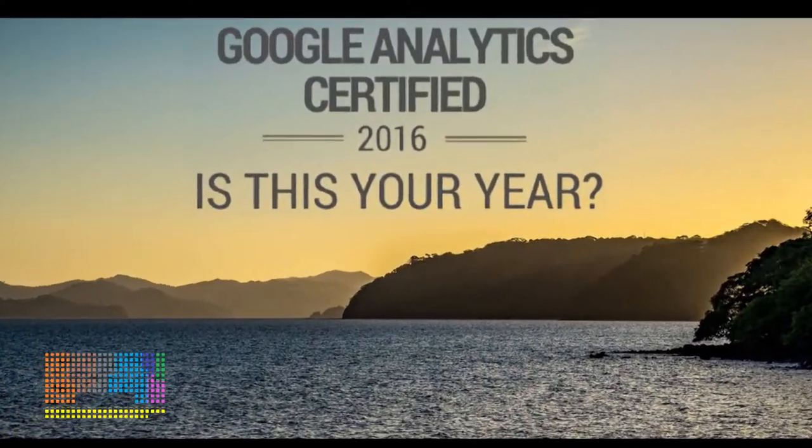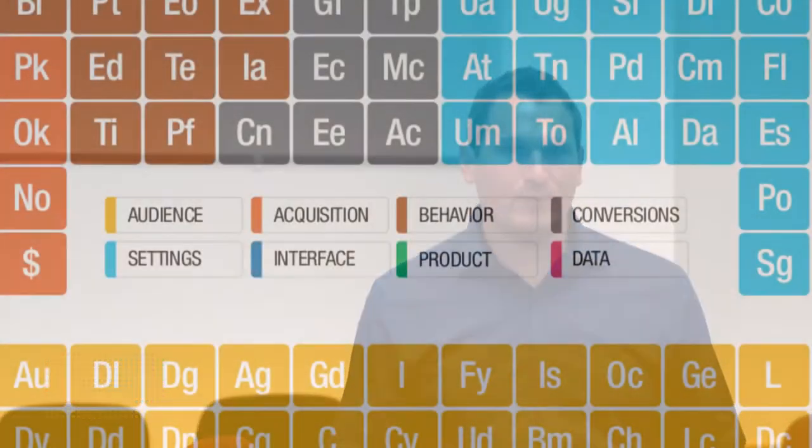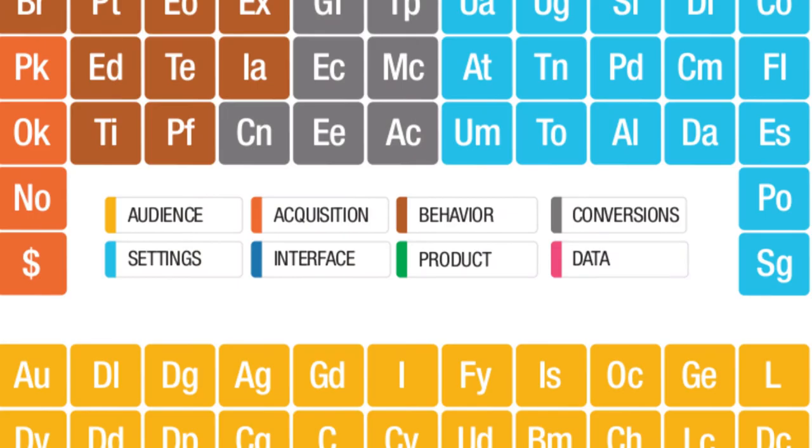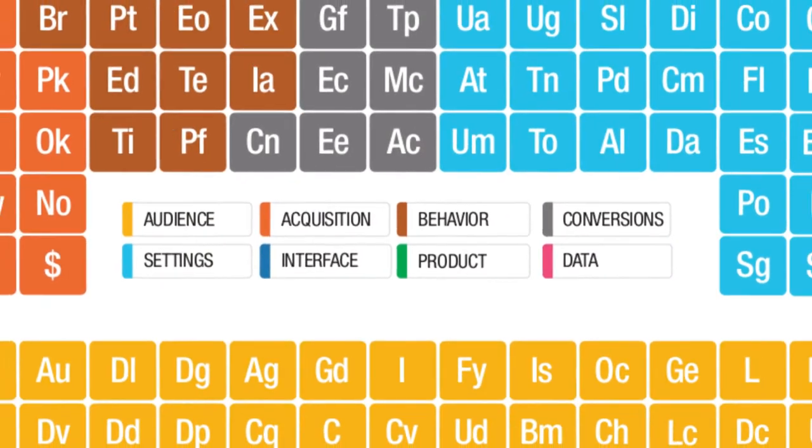We are going to start by releasing videos to introduce each of the elements to our YouTube channel. To give you a quick overview of our Periodic Table, we have eight groups, each containing 7 to 40 elements.